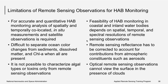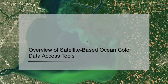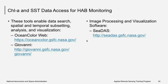Despite these limitations, many studies and tools have successfully used remote sensing — particularly band reflectance combinations — to derive chlorophyll-a concentration, sea surface temperature, and salinity, providing ocean color information that can indicate HABs. We'll now provide an overview of satellite-based ocean color data access tools where products are already available, focusing on chlorophyll-a concentration and sea surface temperature as the two most important parameters for HAB monitoring.